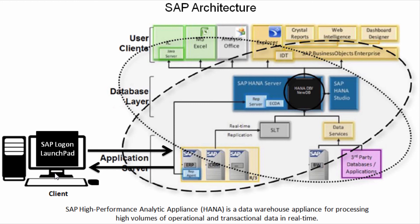This is what a simple SAP architecture looks like — it's not complicated at all. For interviews, just draw the client with SAP Logon Launchpad installed, the ERP app server, and the HANA server. You can also mention that the database can be accessed directly via clients like Crystal Reports or Excel. That's good enough for interviews. Now you have a ballpark idea of the architecture. In the next video I'll show you how to install the SAP Logon Launchpad on your desktop.